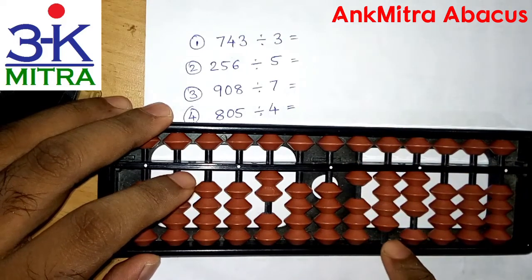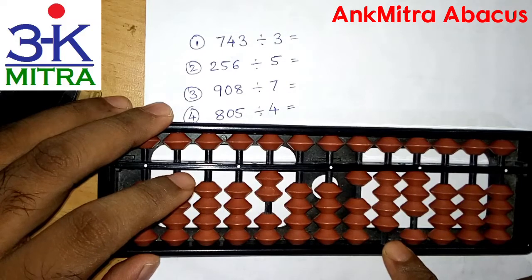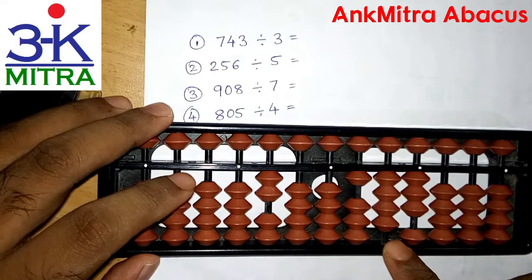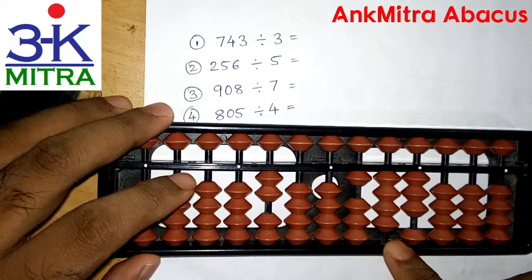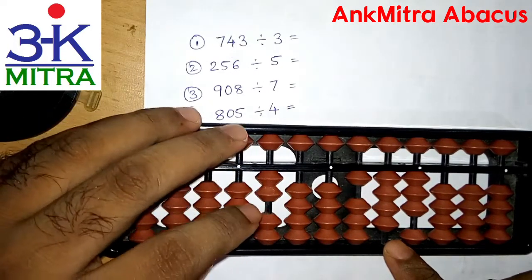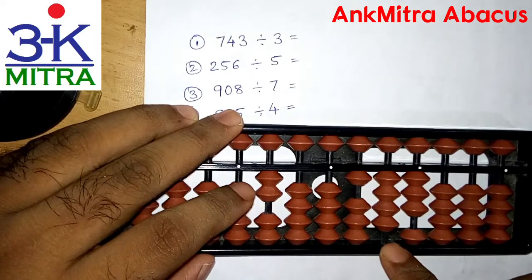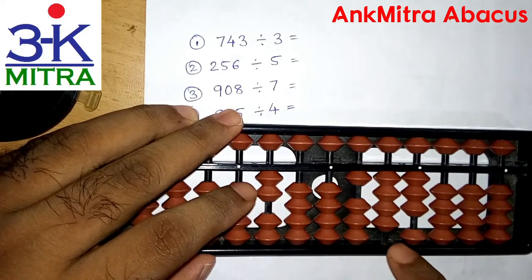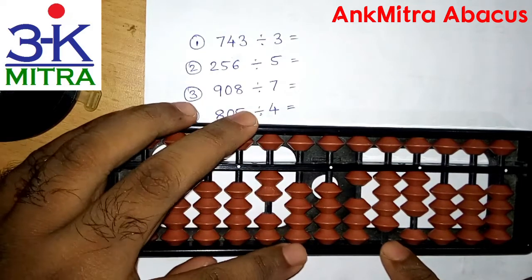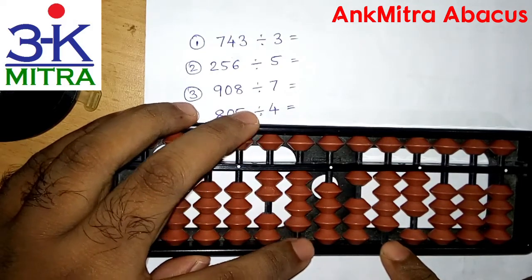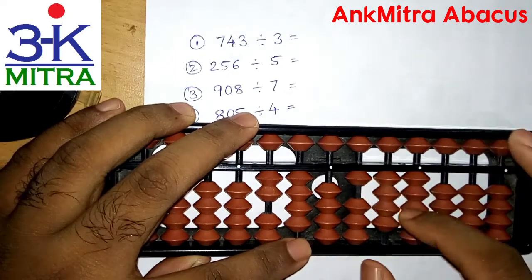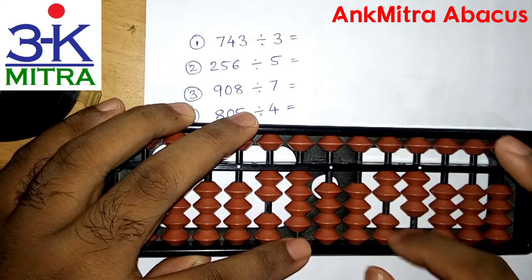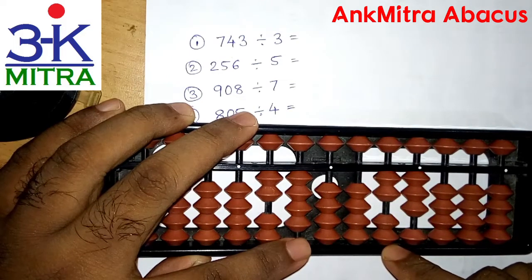Moving to the next rod, that is the second rod of the question set. The number that we have is 14. We recite the table of 3, getting as close to 14 as possible without surpassing it, and we get 4 times 3 which is 12. The 4 times will be taken on the exactly corresponding rod of the answer set — the second rod — and then we subtract 12 from this 14.